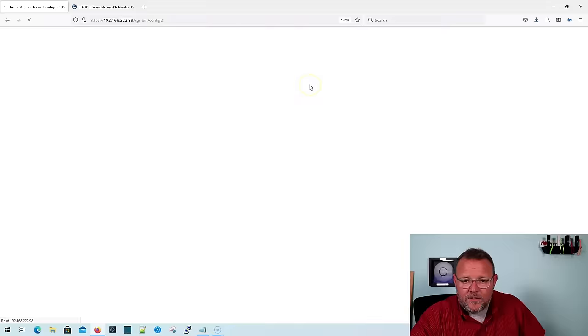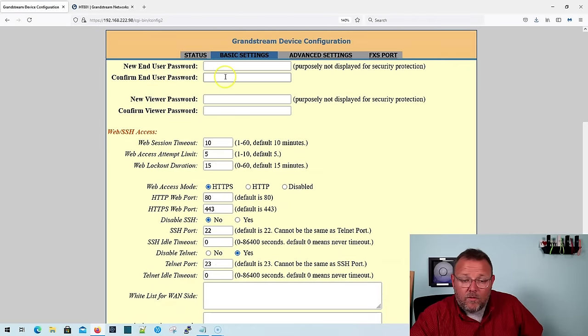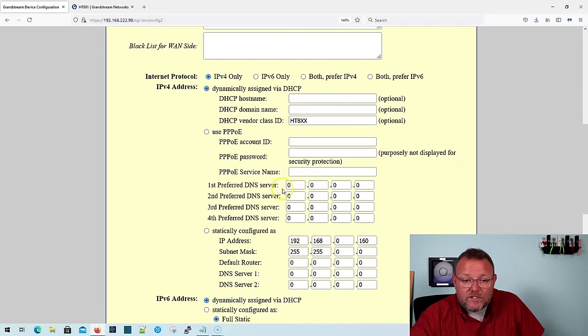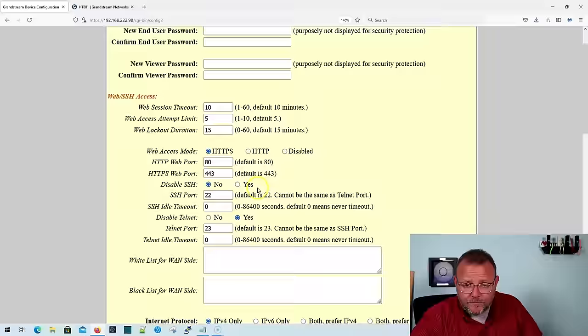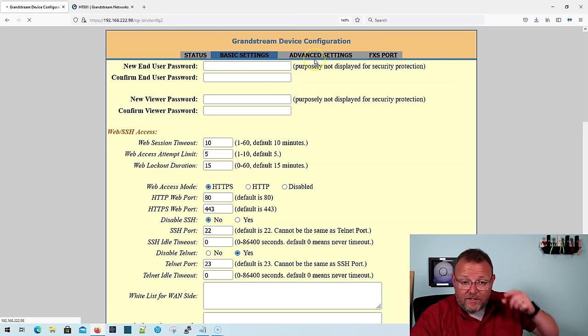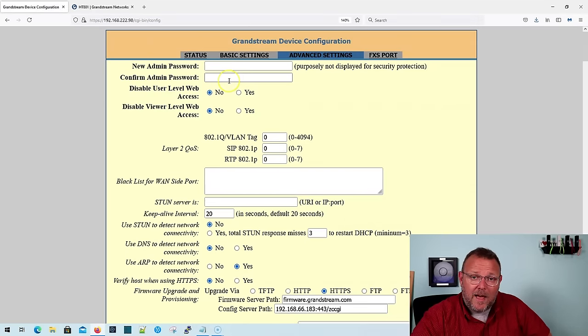Okay, so basic settings. You will probably want to change the passwords because they are all default. You'll want to change your web access mode to HTTPS. You can put a static IP on it. I'm using DHCP for this because it registers to the PBX. And I'll be able to find it. So I really don't have a static on it for now. Then under advanced settings, you're going to see this is where you can change that admin password. Make sure you change the admin password so it is not admin. And then here you have the option to disable user or viewer level web access. That's going to be according to your security policies.